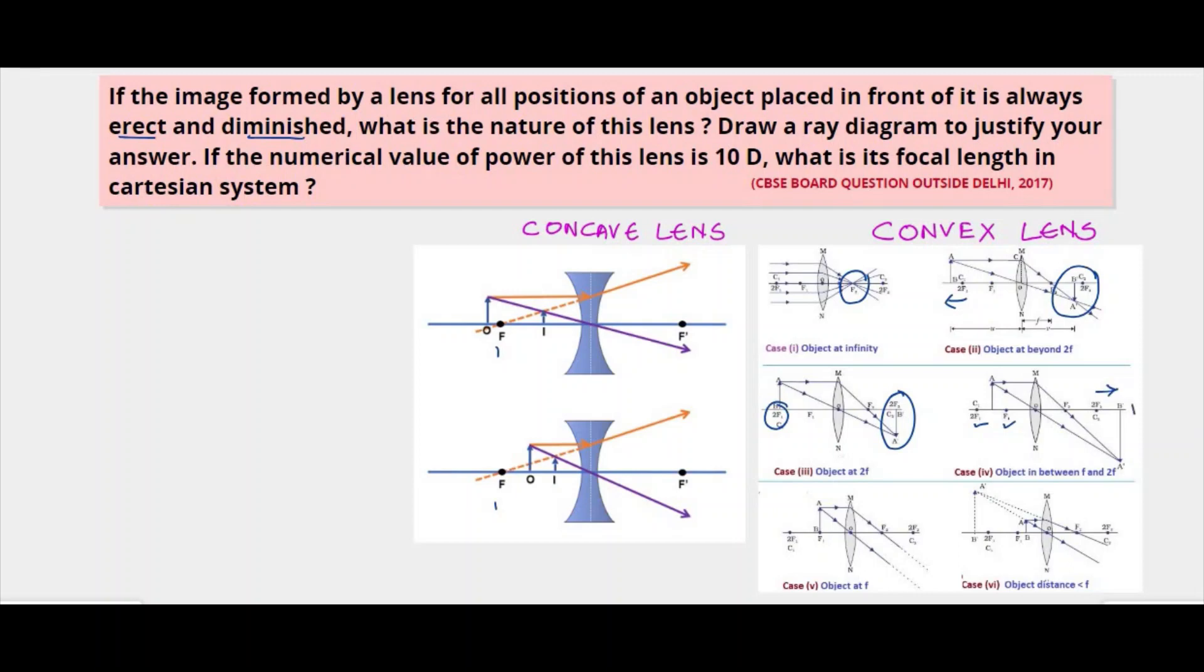When the object is placed between 2F1 and F1, the image is formed beyond 2F2 and it's a magnified image and inverted. When the object is placed at F, the image is formed at infinity, inverted and highly magnified. When the object is placed between F1 and O, the image formed is magnified but it's a virtual image.